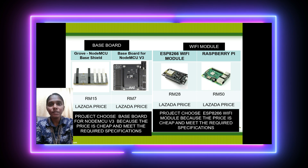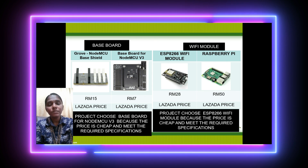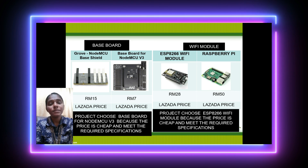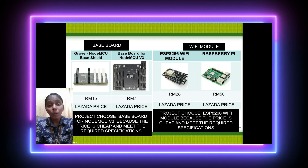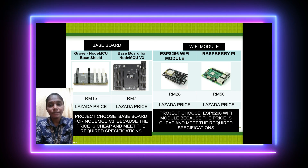The second component comparison is the WiFi module. The first type is the ESP8266 WiFi module at RM28, while the second option — Raspberry Pi — costs RM50. Both prices are from Lazada. This project uses the ESP8266 WiFi module because it is cheaper and suitable for our project.